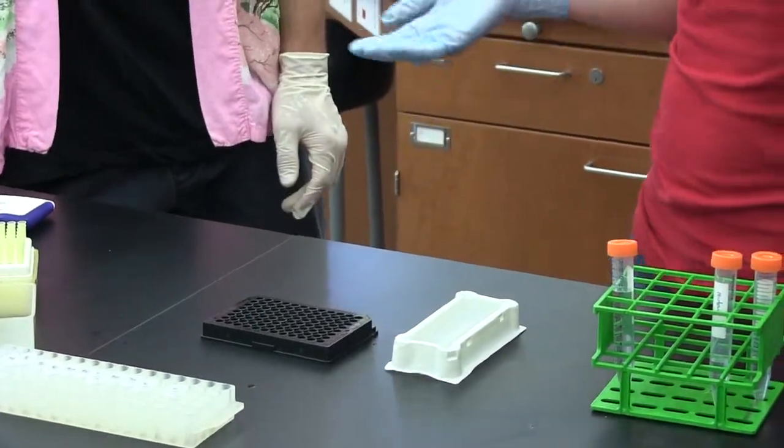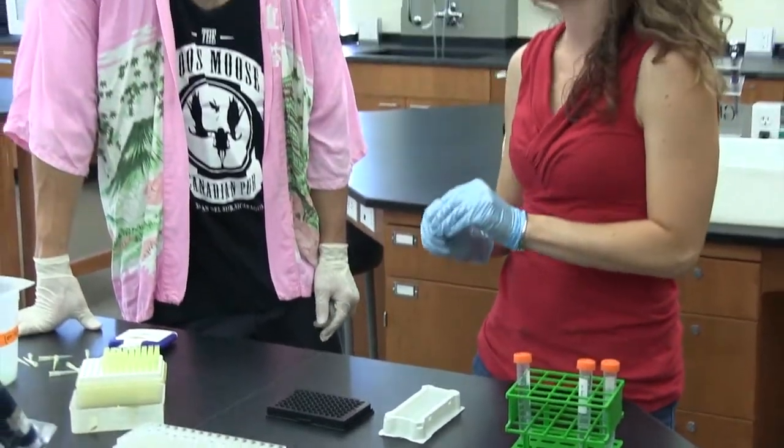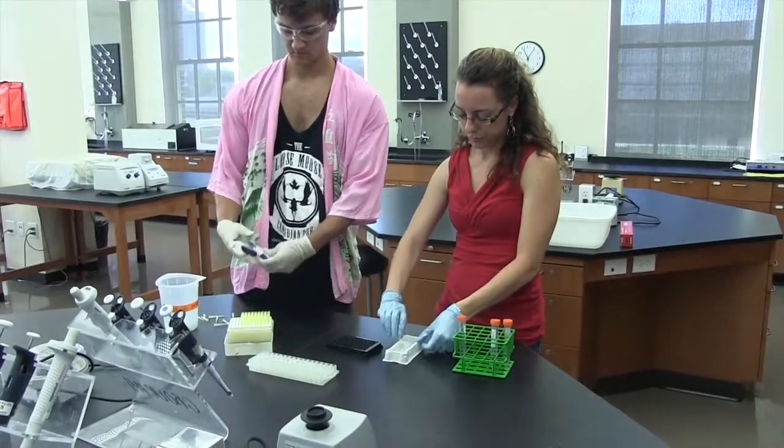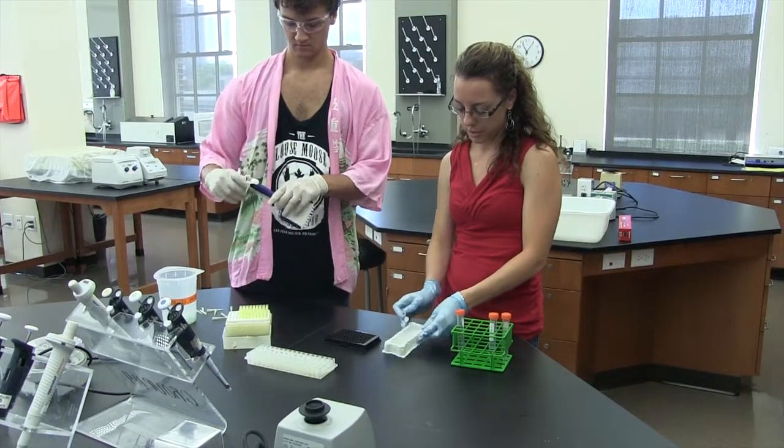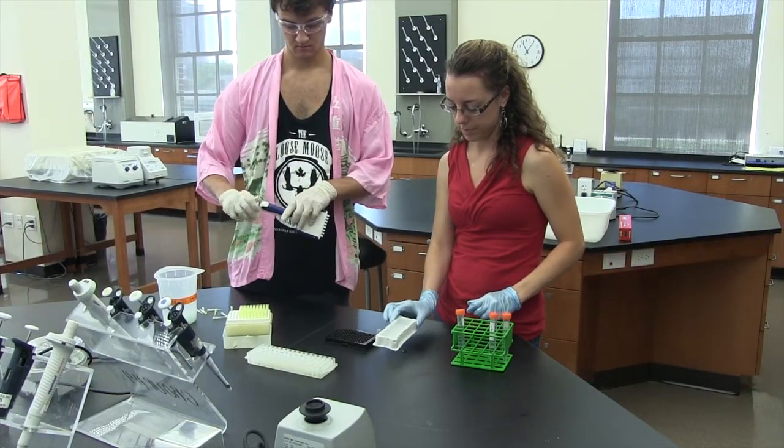So then at this point you would use the multi-channel again and do the same thing to add each concentration of urea. So these are 1.5 mL stocks, which is enough to fill the center of these little well things.